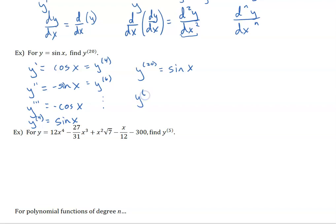Now if I were looking for a derivative that wasn't divisible by four — so maybe I was doing the 103rd derivative of sine of x — since 103 is one more than a multiple of four... wait, one less than a multiple of four, then I would be at the same as the third derivative, so this is going to be negative cosine x. We can use this pattern to answer questions like this. It's very unlikely you will be asked to write something out higher than the third derivative — if you are, you should be looking for some kind of pattern.